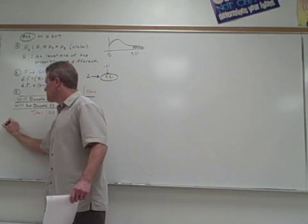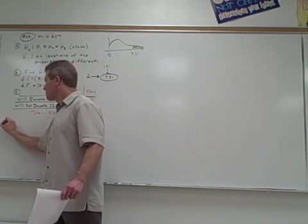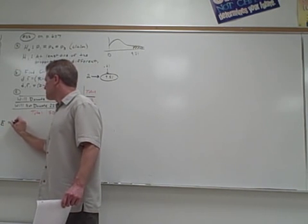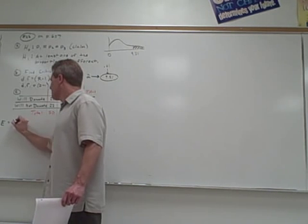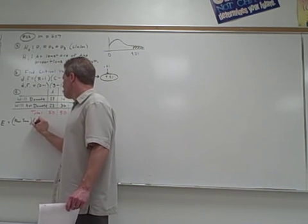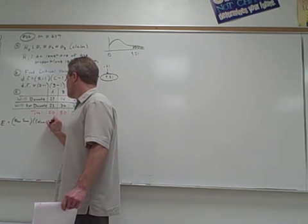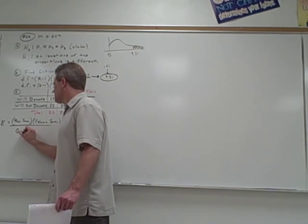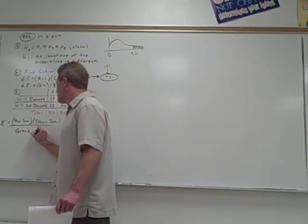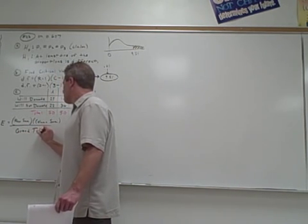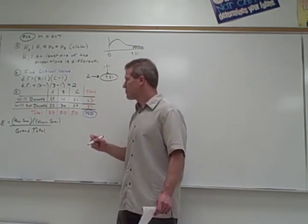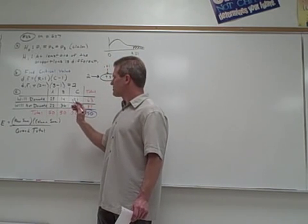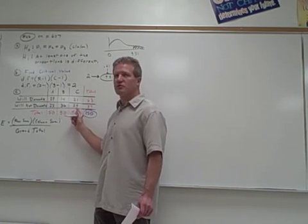To get the test value, we first need to figure out all the expected values. The expected values are found by taking the row sum times the column sum divided by the grand total. One nice thing here is that the column sums are all the same — 50, 50, 50 — so that makes things go a little quicker. We're going to find six different expected values, since there are six observed values.